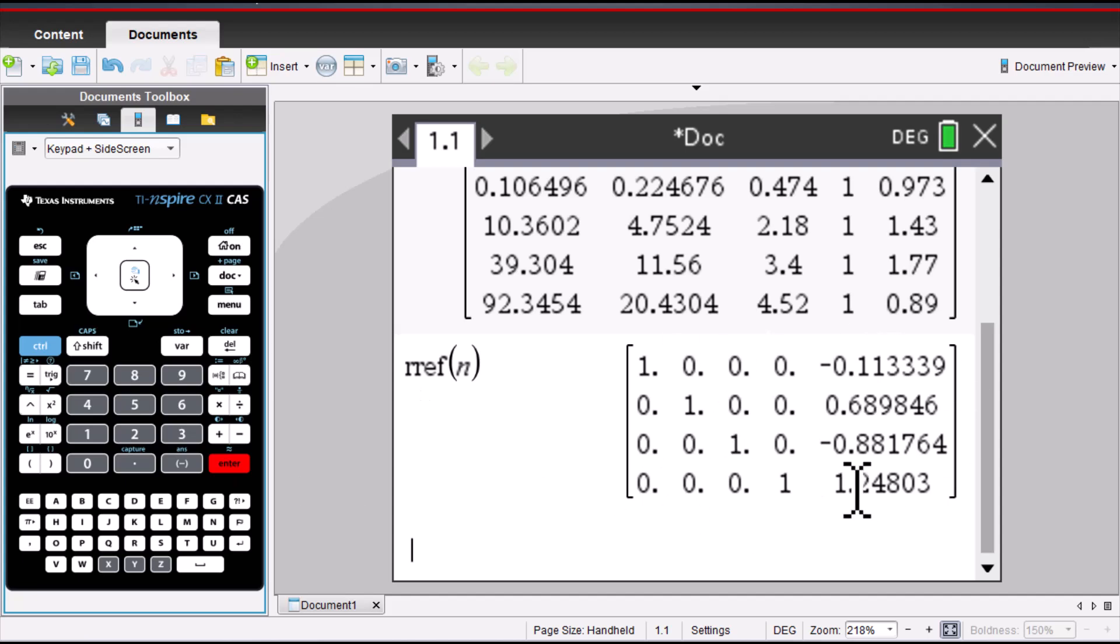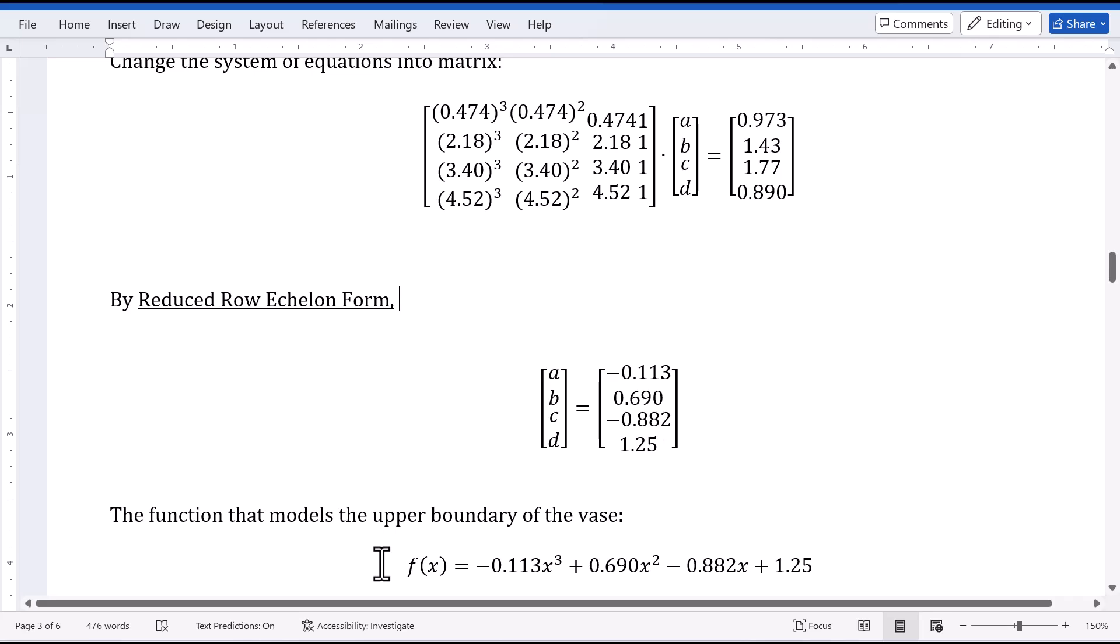We got the values for A, B, C, D separately. Then I got the function to model the upper boundary of the vase. F of X.